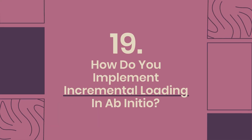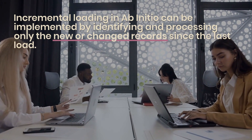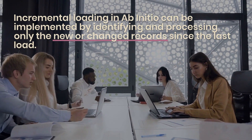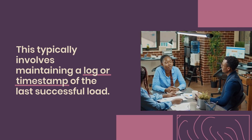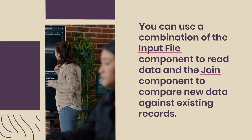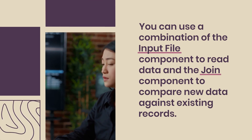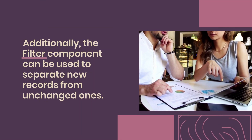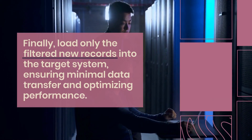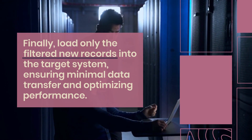Question 19: How do you implement incremental loading in AbInitio? Incremental loading can be implemented by identifying and processing only the new or changed records since the last load. This typically involves maintaining a log or timestamp of the last successful load. You can use a combination of the input file component to read data and the join component to compare new data against existing records. Additionally, the filter component can be used to separate new records from unchanged ones. Finally, load only the filtered new records into the target system, ensuring minimal data transfer and optimizing performance.